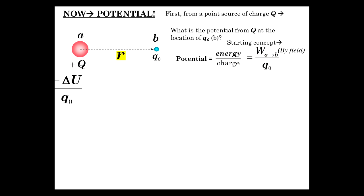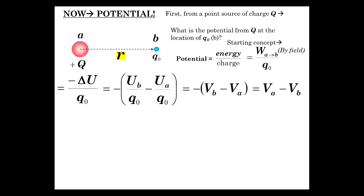So this is by the field. Now, this is equal to negative delta U over Q0, negative change in potential energy, which is equal to the work done by the electric field. And that is negative change, negative final minus initial. So that's what we define as each one of these is potential. So potential at B minus potential at A, minus VB minus VA, which is VA minus VB.